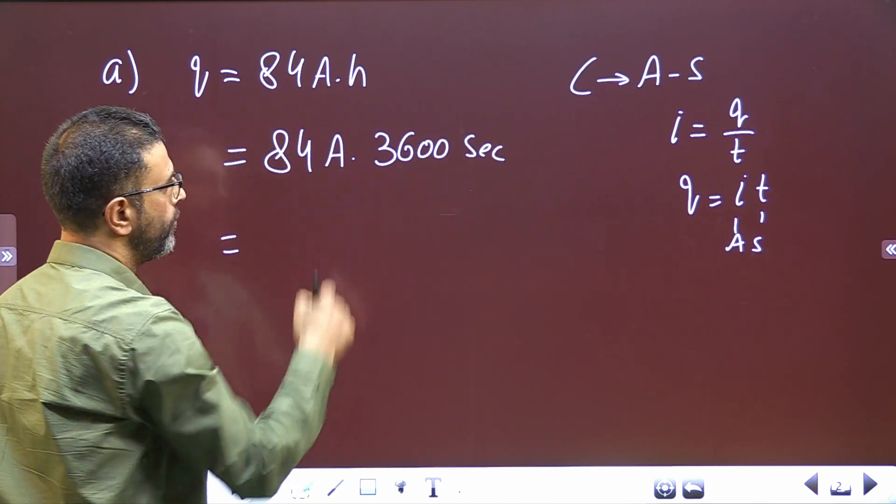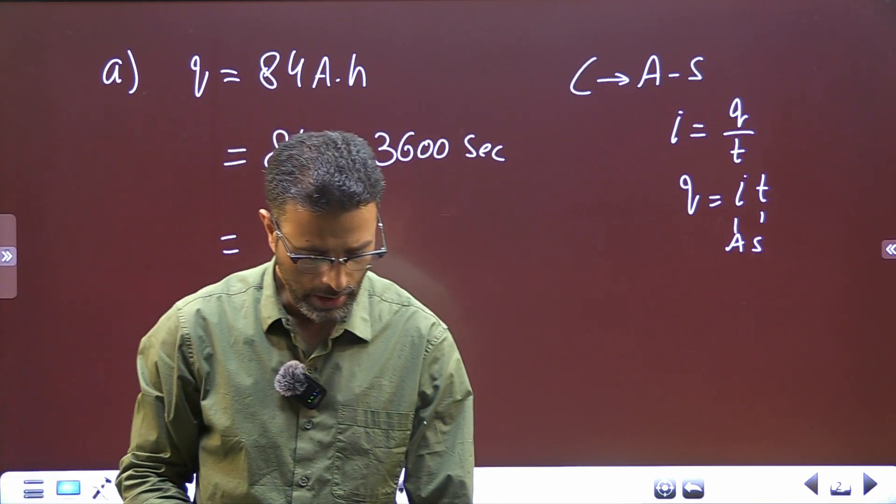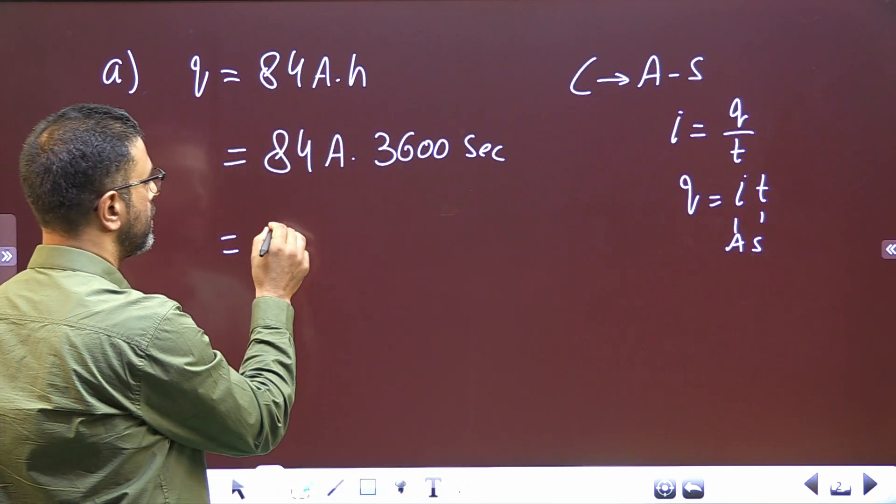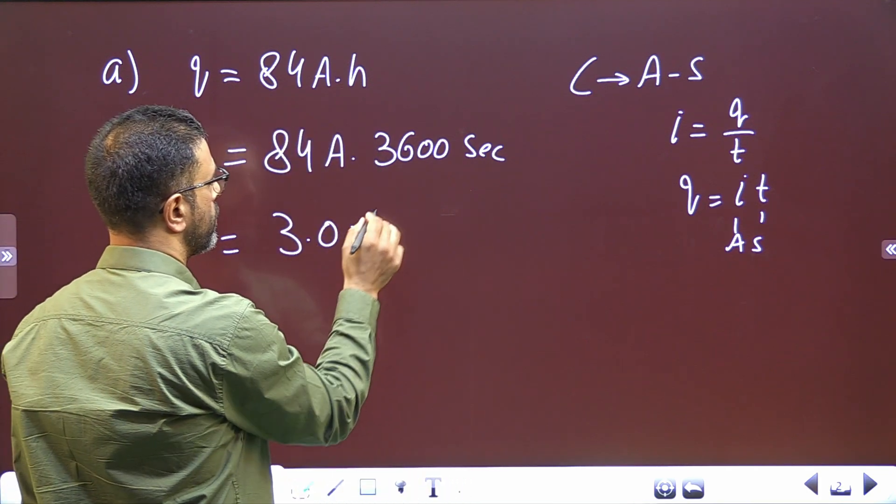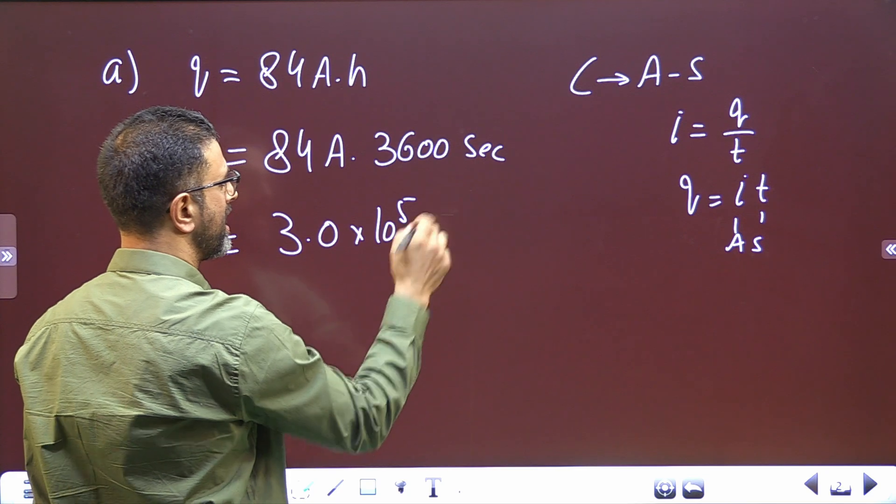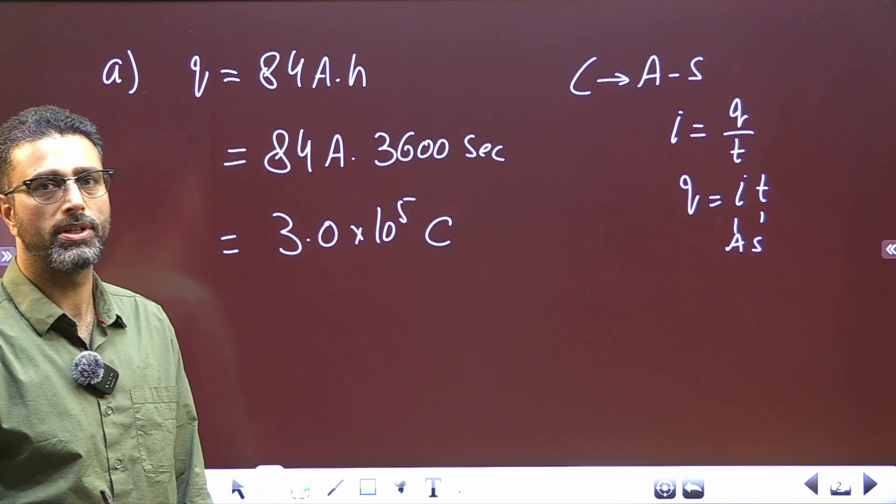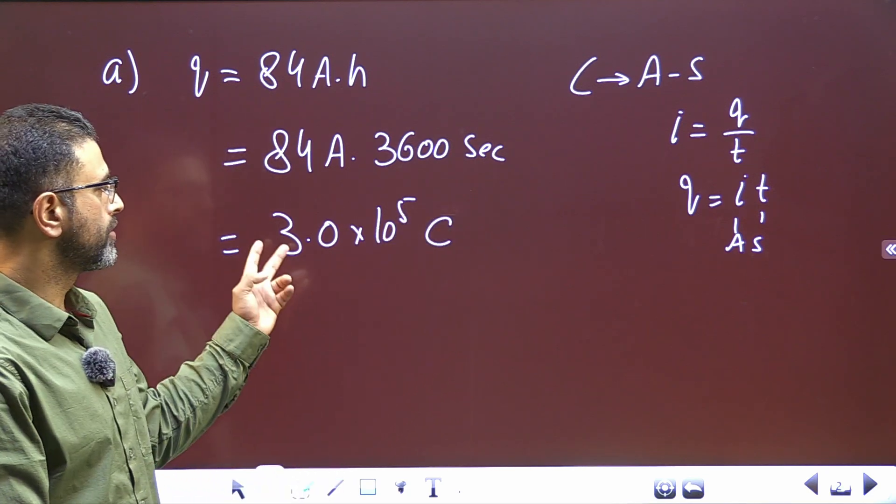So this is 84 times 3600, which comes out to be 3.0 times 10 to the power 5. Ampere-second is coulomb, so the charge flowing is 3.0 times 10 to the power 5 coulombs.